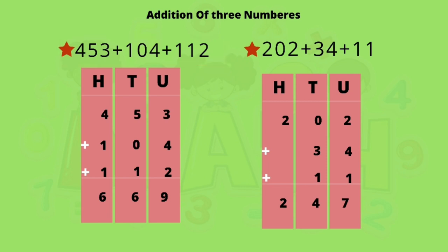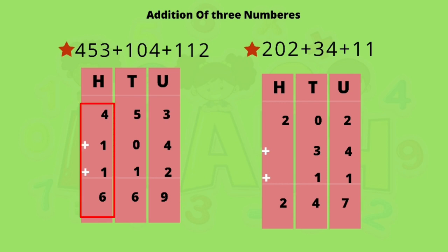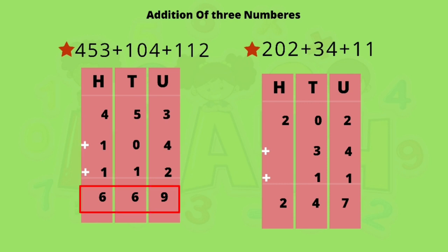Let us begin the addition from the units column. Three units plus four units is seven units; seven units plus two units is nine units. In the tens column: five tens plus zero tens is five tens; five tens plus one ten is six tens. In the hundreds column: four hundreds plus one hundred is five hundreds; five hundreds plus one hundred is six hundreds. So the answer is 669.